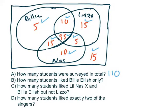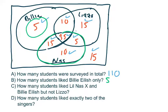How many students like Billie Eilish only? The people that like Billie Eilish only are in the region outside of Lizzo's set and outside of Lil Nas X's set. So how many students like Billie Eilish only? Five. How many students like Lil Nas X and Billie Eilish but not Lizzo? They have to be within Lil Nas X's circle and within Billie Eilish's circle. The people that like both would be in those two overlapping regions, but they don't like Lizzo — so we're looking at just one region with 15 people. That's 15.